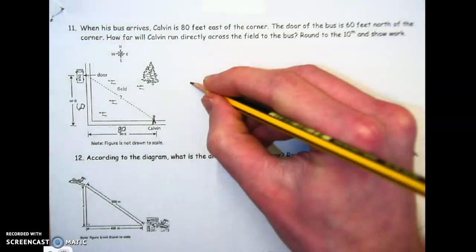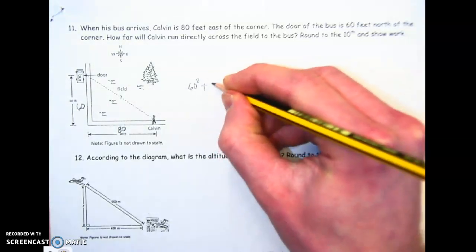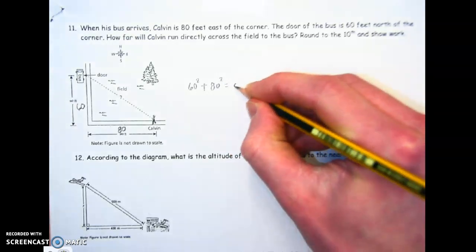Let's see what the legs squared added together get us. 60 squared plus 80 squared is going to get us C squared.